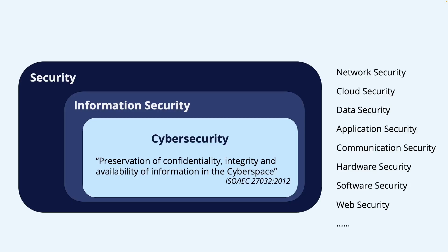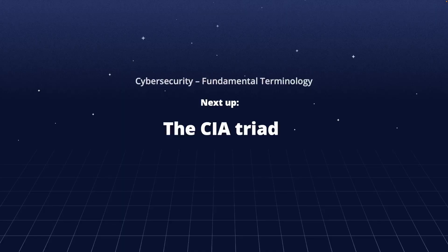However, since we are not putting much focus on policies, procedures, and organizational aspects, we believe that cybersecurity is more representative to use. Still, it is good to keep in mind that there are not very clear distinctions between all the named subfields and there are often significant overlaps. As I mentioned, in the next part we will discuss confidentiality, integrity, and availability. This is known as the CIA triad, which is a very central aspect of both information and cybersecurity.